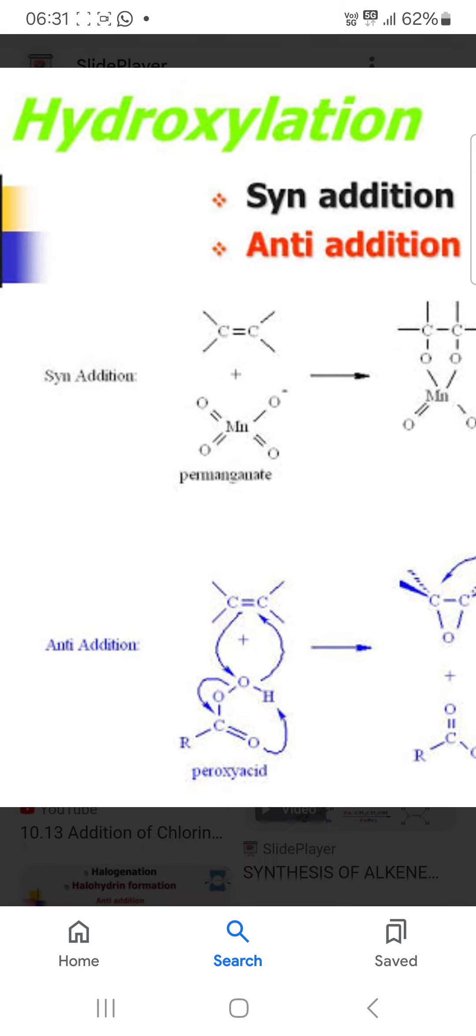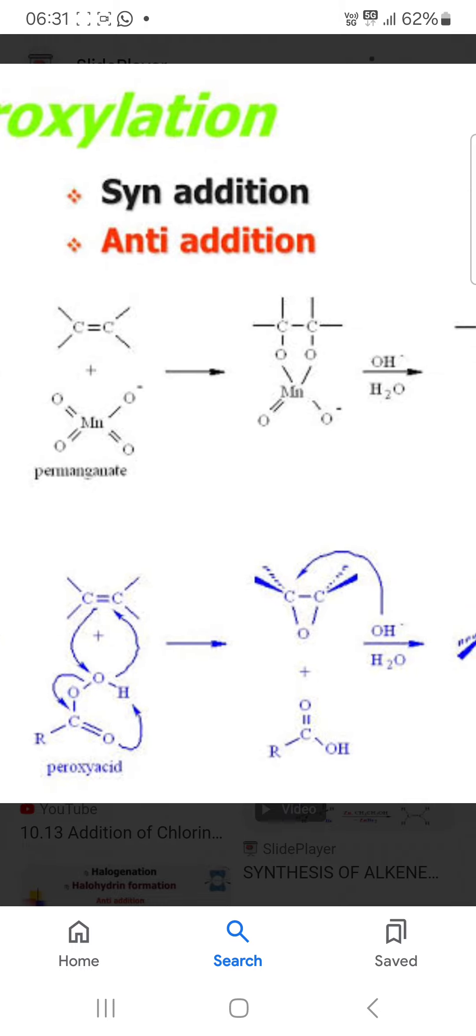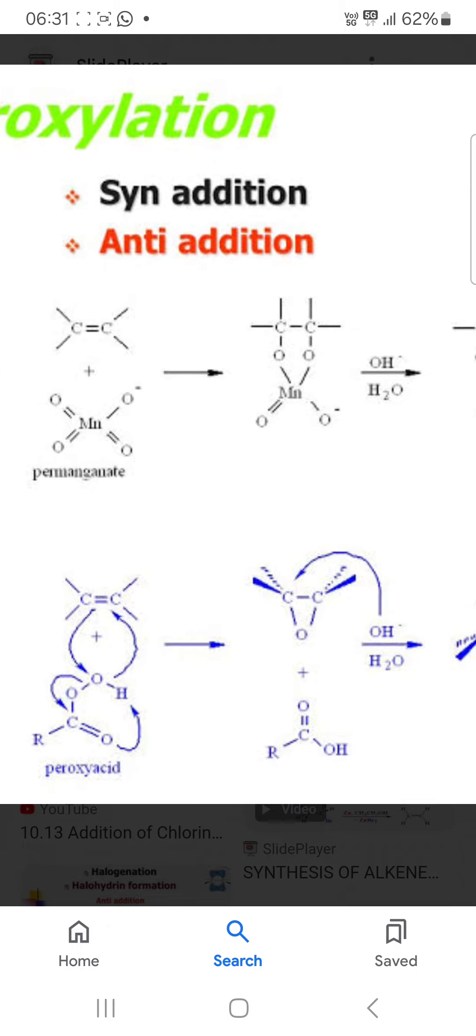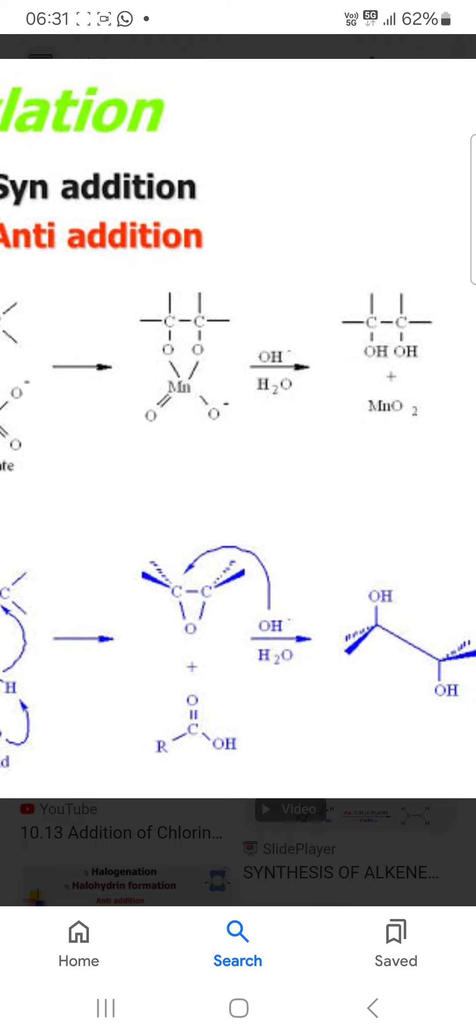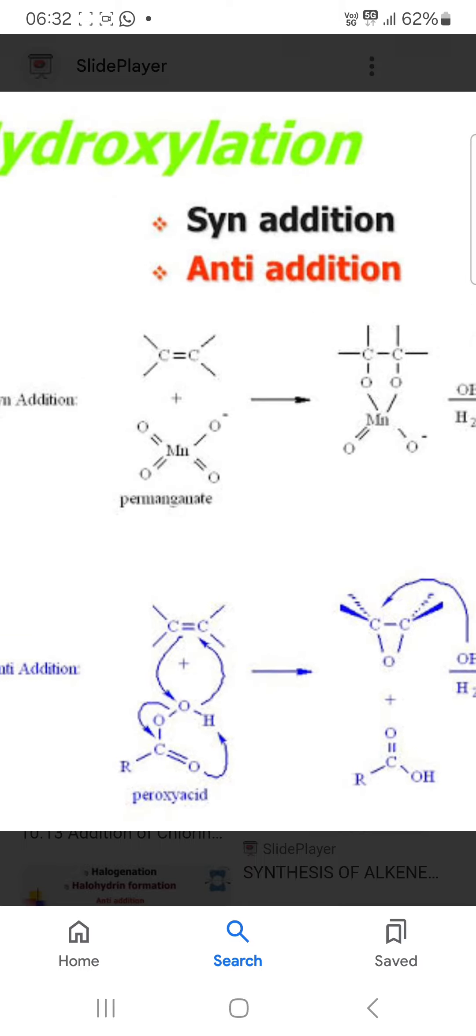Now if you have the peroxy acid like this then you have the epoxide. This is the epoxide with oxygen and the carbon ring, and nucleophile attack on this carbon forms anti additions.